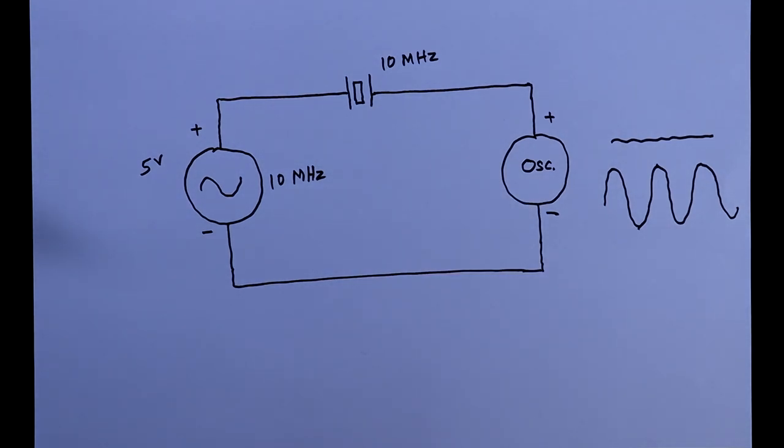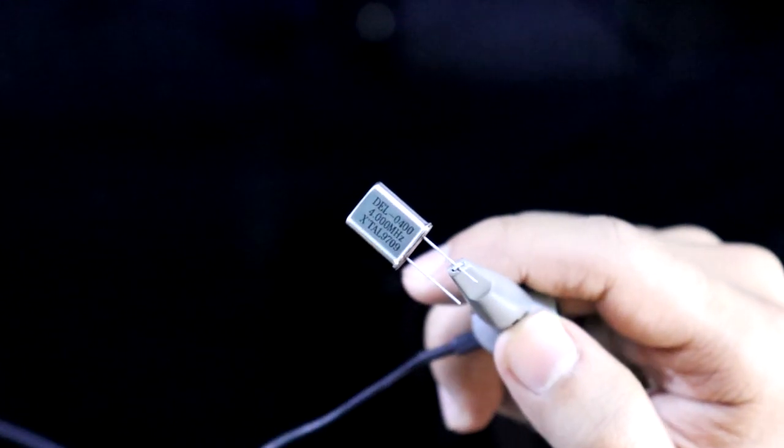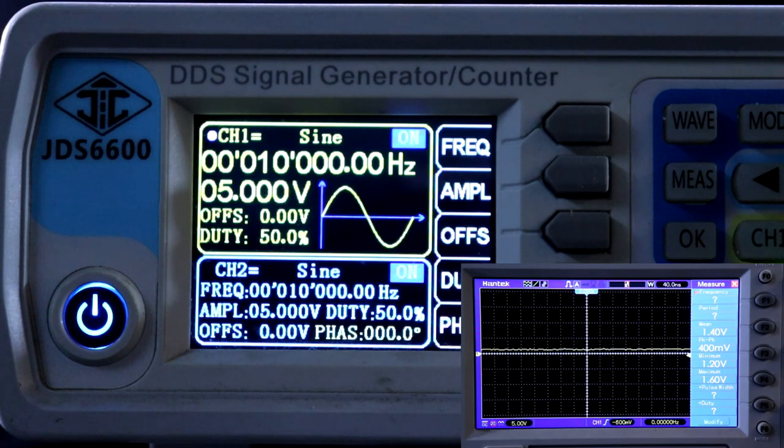Now we will see this in practical. It is 4MHz. One pin to the oscilloscope and another to function generator positive. Now see, I am supplying sine wave.